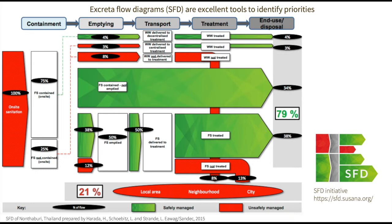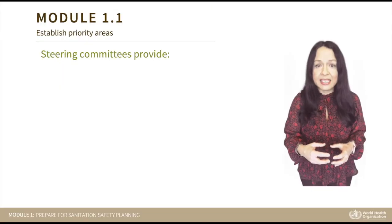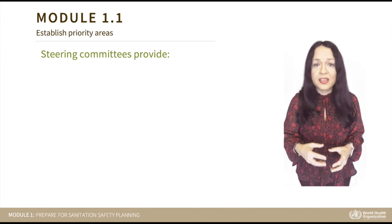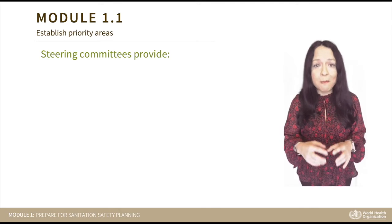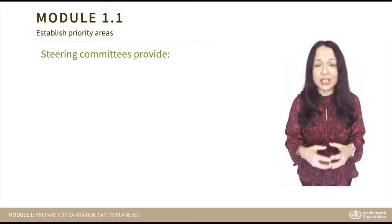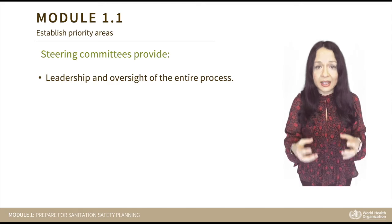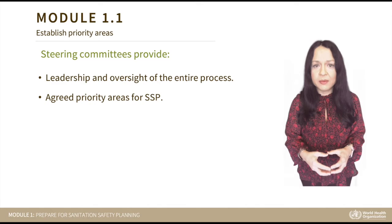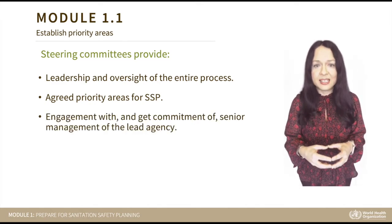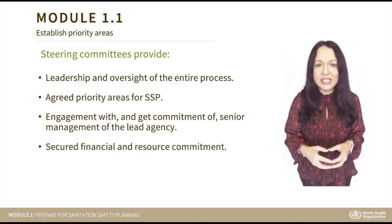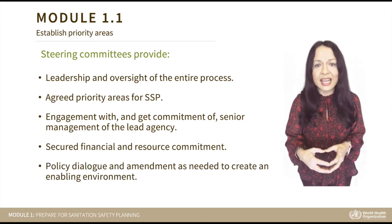The flows marked in red indicate that they are not safely managed, indicating the priority which needs to be given to them. When we undertake sanitation safety planning in a locality with a broad range of sanitation activities, we should establish a steering committee. The steering committee should be a representative body with combined oversight of sanitation and reuse activities in the area. Steering committees provide leadership and oversight of the entire process, agree on priority areas for SSP, engage senior management of the lead agency, secure financial and resource commitment, and support policy dialogue and amendment to create an enabling environment.